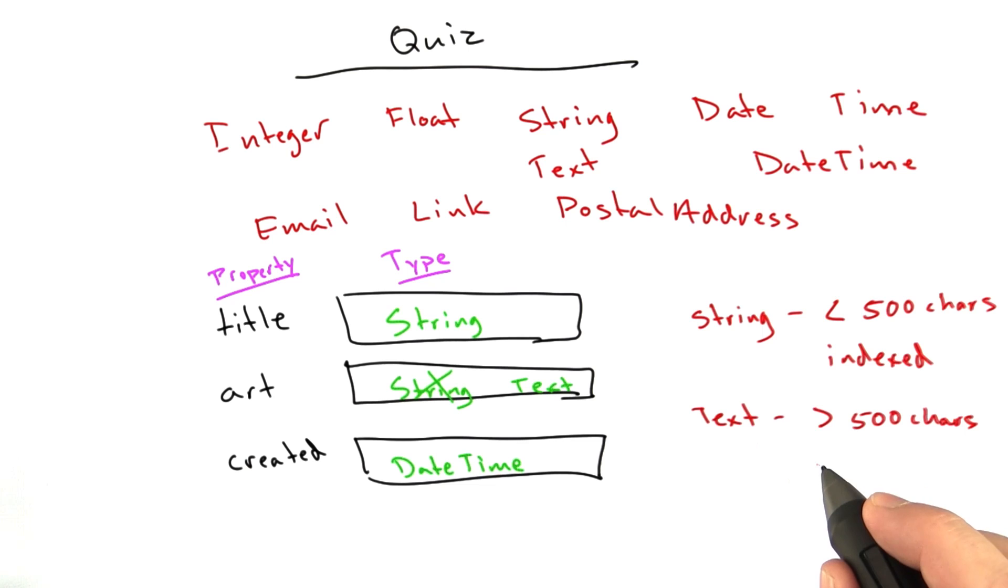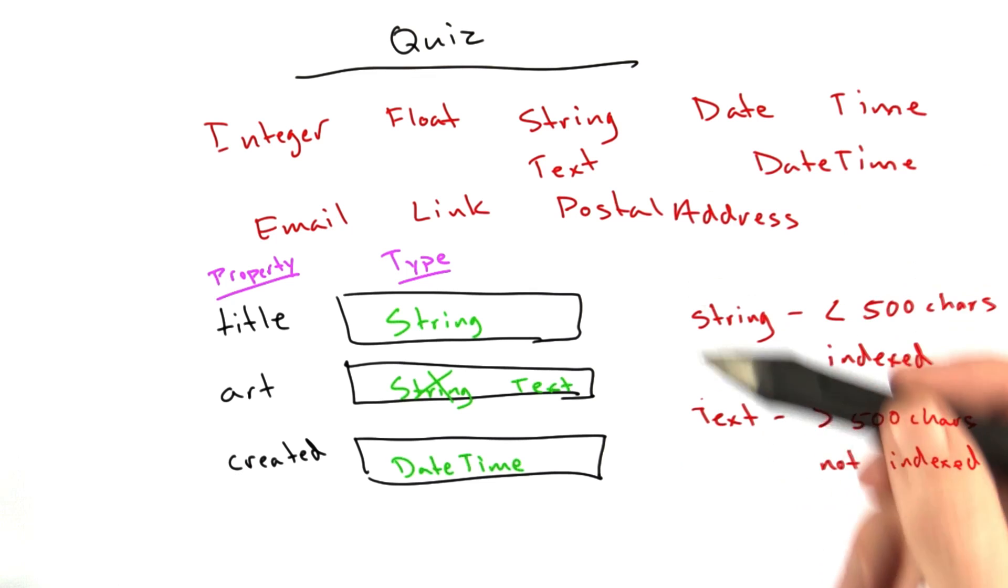And text cannot be indexed, which means, of course, that we can't sort based on a text property. This is fine. In our case, we're going to sort probably on the created property so it can show things in order.